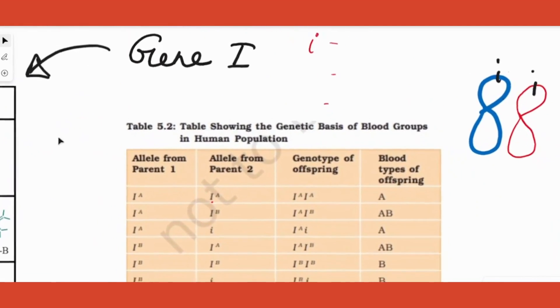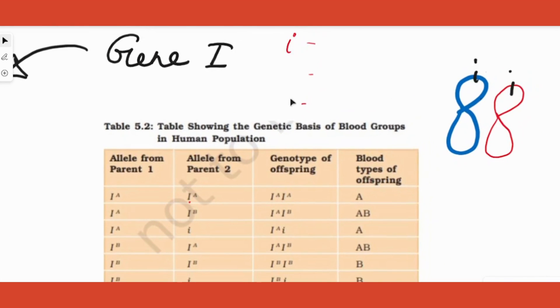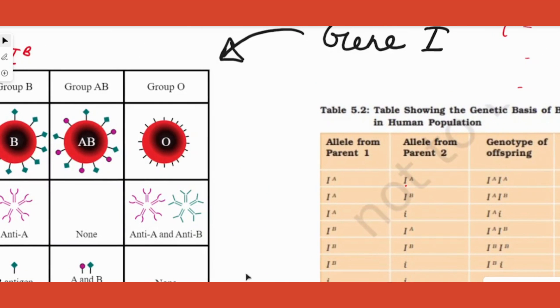But the problem here is we have only two chromosomes in a homologous pair, but how can I have all three? I cannot have all three alleles. Instead, any one among the three - either I or IA or IB - can be present.